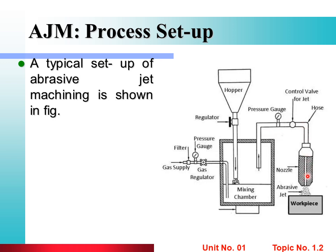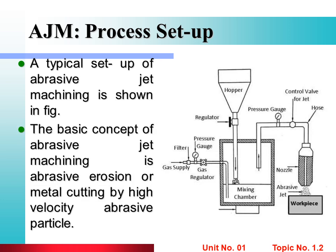The abrasive particles come into the nozzle. The control valve and pressure gauge control the flow of abrasive particles. This outgoing high-speed stream that comes out of the nozzle is known as the abrasive jet. This abrasive jet strikes the workpiece to fracture its surface and machining is done. The basic concept of abrasive jet machining is abrasive erosion or metal cutting by high-velocity abrasive particles.